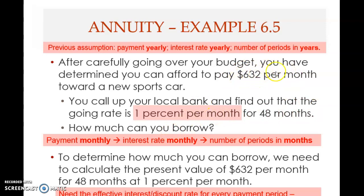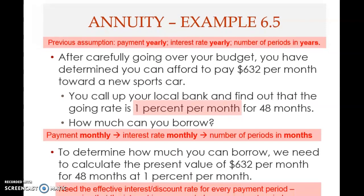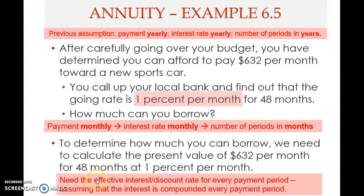This monthly case is different from the yearly examples we have seen earlier. Now, you determine the payment first — the payment determines the interest rate you apply, and the interest rate determines the number of periods. So it must go in that order: payment first, then interest rate, then number of periods. If the payment is monthly, the rate must be monthly and periods in months; if yearly, then all must be yearly.